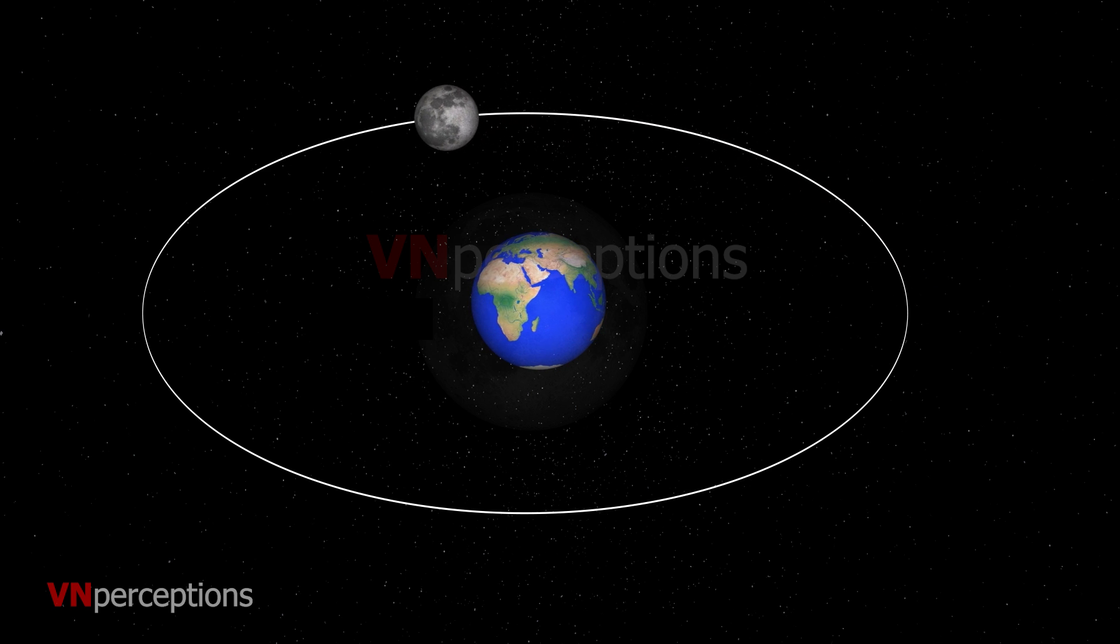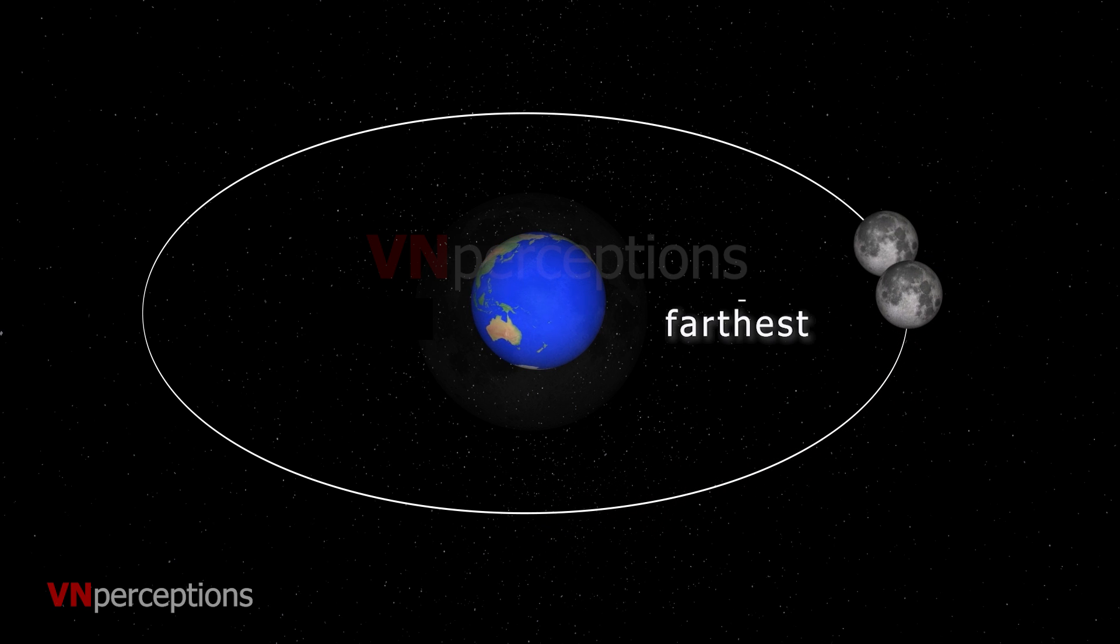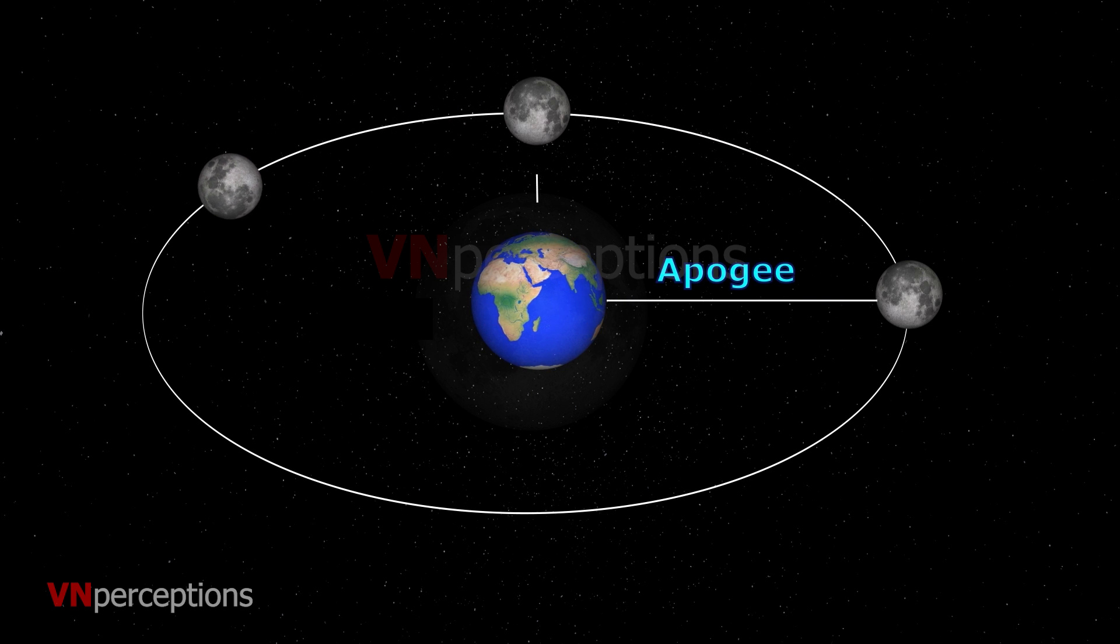Since the orbit of the moon is elliptical, the distance between the moon and the earth changes during different times of every month. The period of the furthest distance between the moon and the earth is called apogee, while the period of the nearest distance is called perigee.